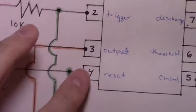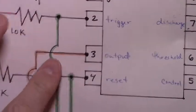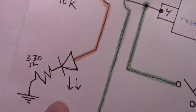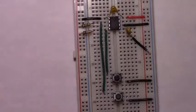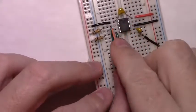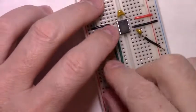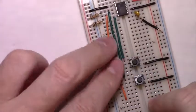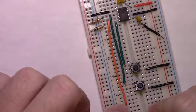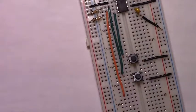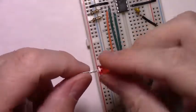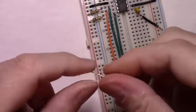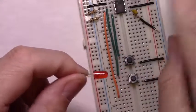To do that, we just need to start at pin 3, the output pin, and connect an LED, the 330 ohm resistor, to ground. This is going to be our output line. With the LED, you just want to make sure that the flat side is toward the ground rail, and the round side is toward the timer.